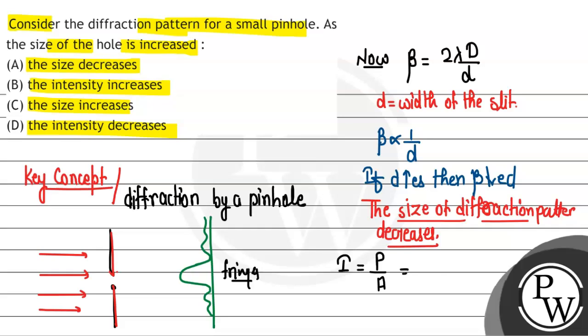Intensity is inversely proportional to area. If area is reduced, then intensity should increase. So due to decreased size, area also decreased, and hence intensity increased.